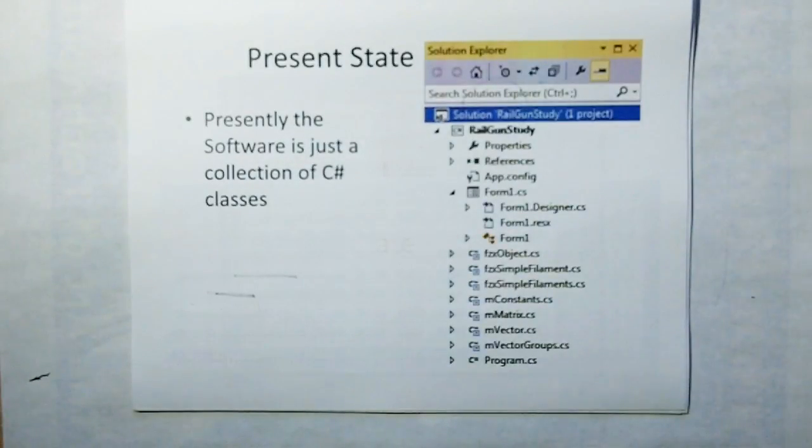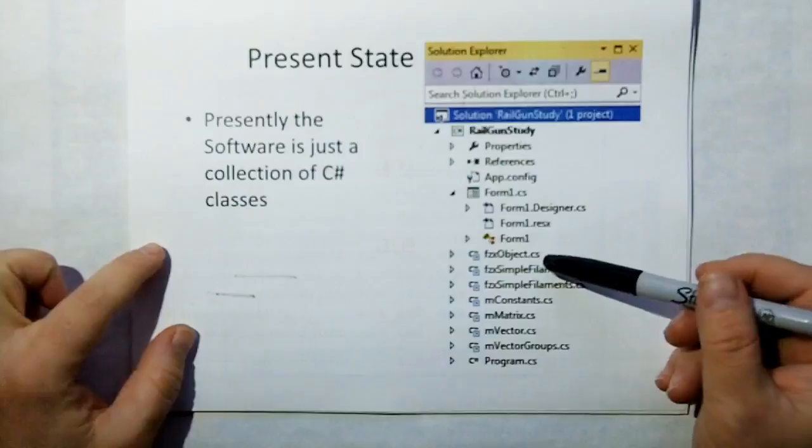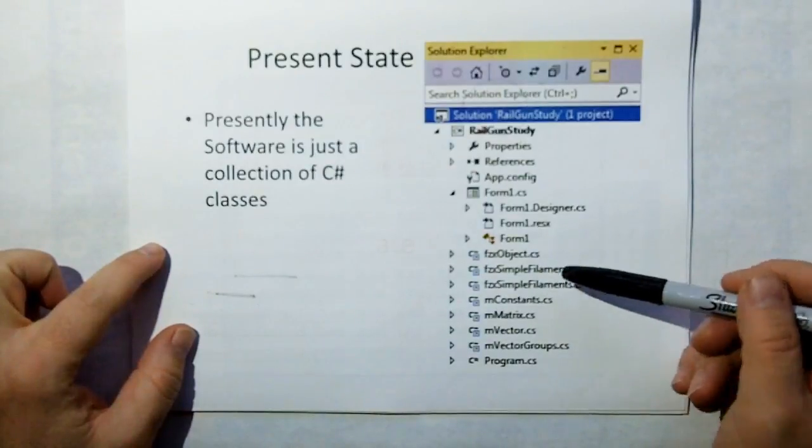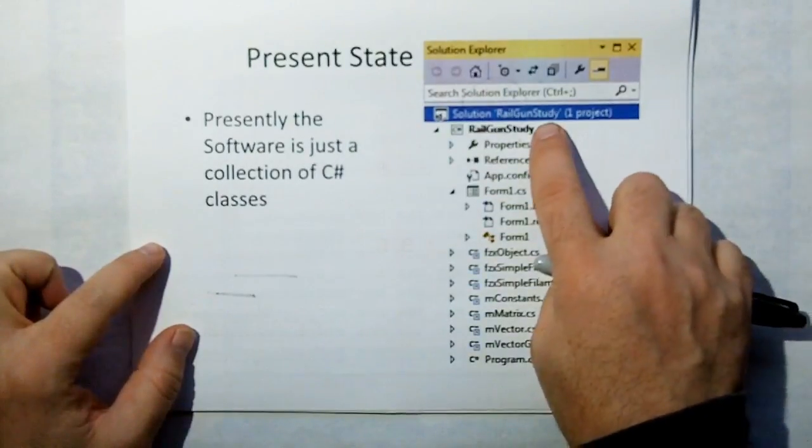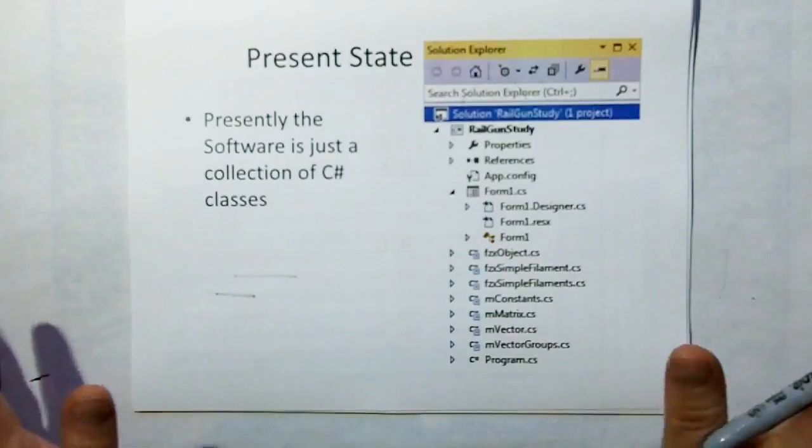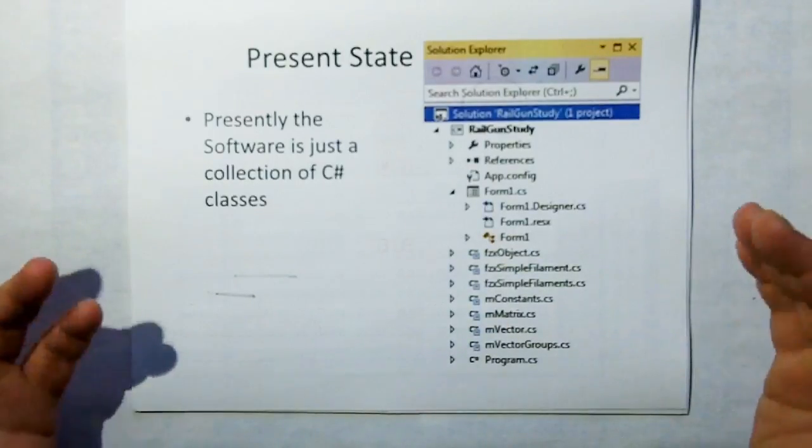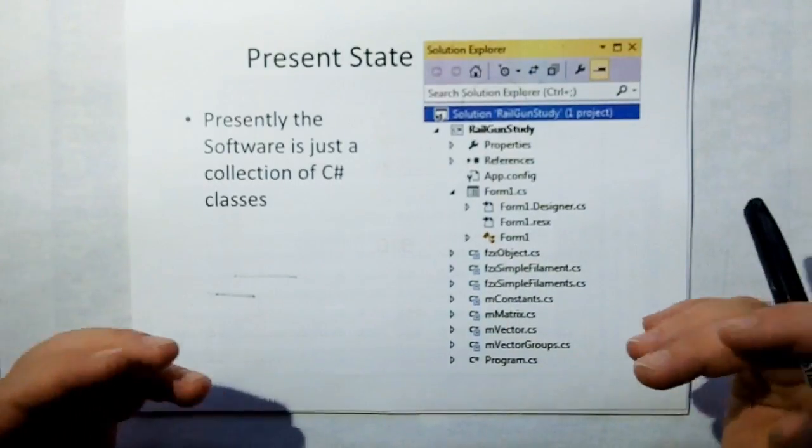The present state of physics is just a couple of C-sharp classes that I can pull into an application, like a little Railgun study, and it computes simple things. It's going to evolve and eventually, hopefully, become an application with its own user interface.